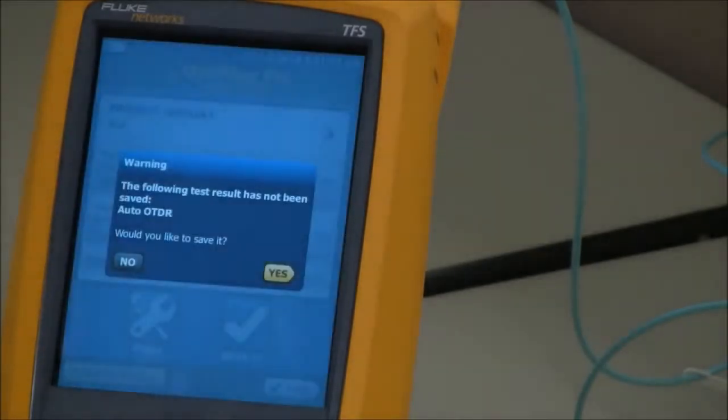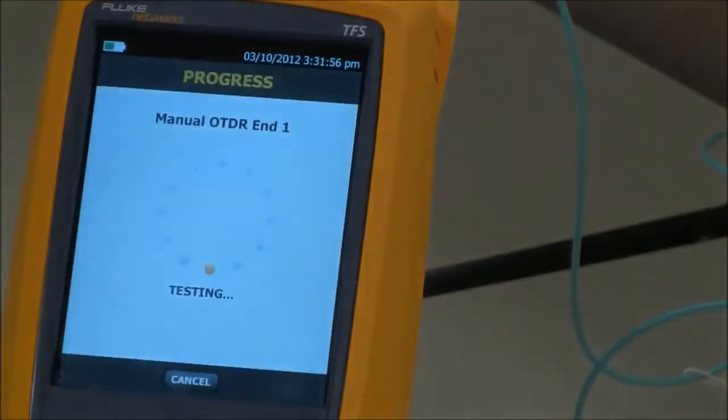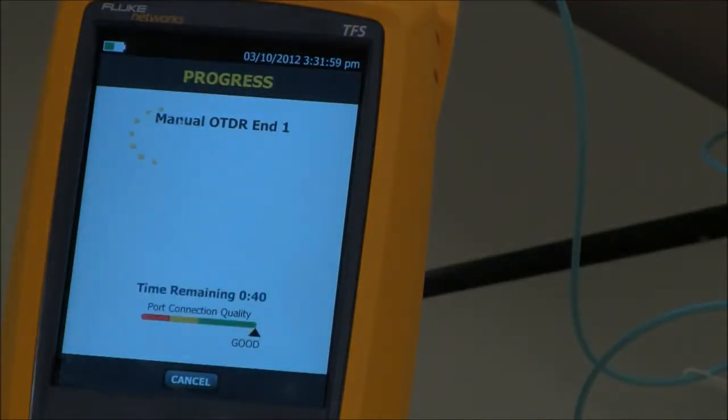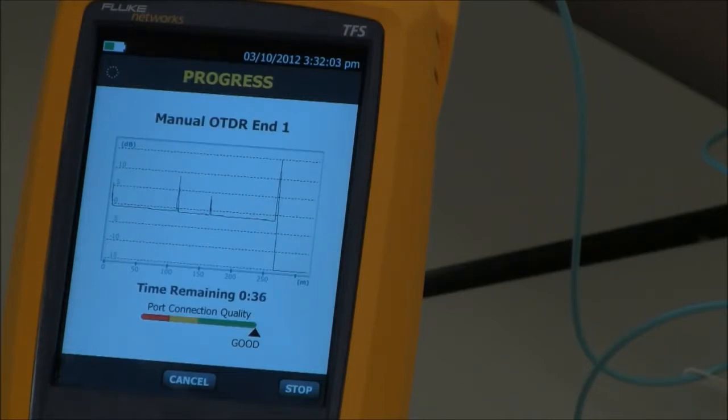Let's hit Test. Don't want to save the last one. And now we'll run it in manual OTDR with that extra averaging time so we get a smoother trace. So, instead of taking 12 seconds to do the test, it's now going to take 40 seconds. That's 20 seconds per wavelength.